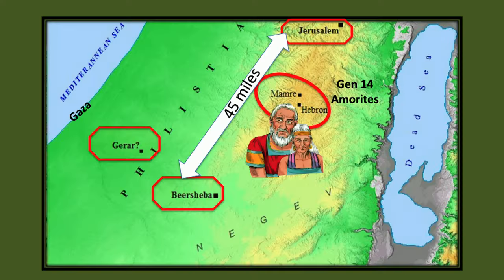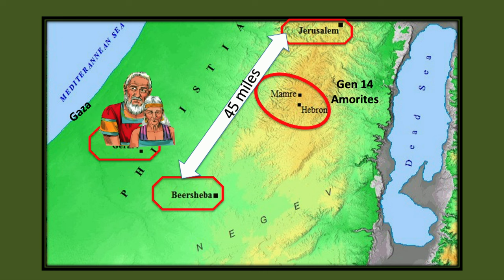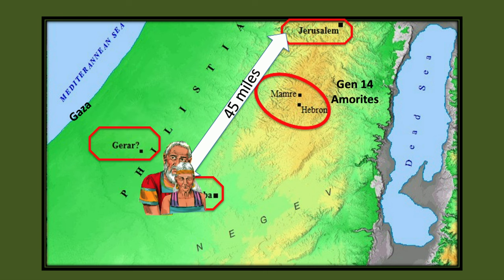This shows us that Isaac voluntarily laid his life down. From Jerusalem to Beersheba is about 45 miles. There's Gerar right next to the Gaza Strip. I have Abraham and Sarah in Hebron because that's where they witnessed the destruction of Sodom and Gomorrah. After that, they took off to Gerar, encountered Abimelech, and then decided to go to Beersheba.